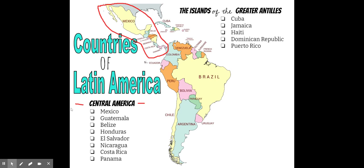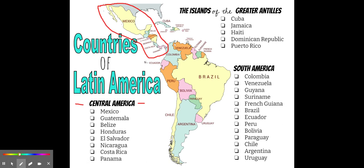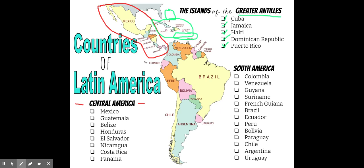We also have the islands of the Greater Antilles located here. For this presentation, we're only going to cover the Greater Antilles: Cuba, Jamaica, Haiti, Dominican Republic, and Puerto Rico. We have the Bahamas located up here, and the Lesser Antilles down here — smaller, tiny islands in two different archipelagos — but we're only covering the Greater Antilles.